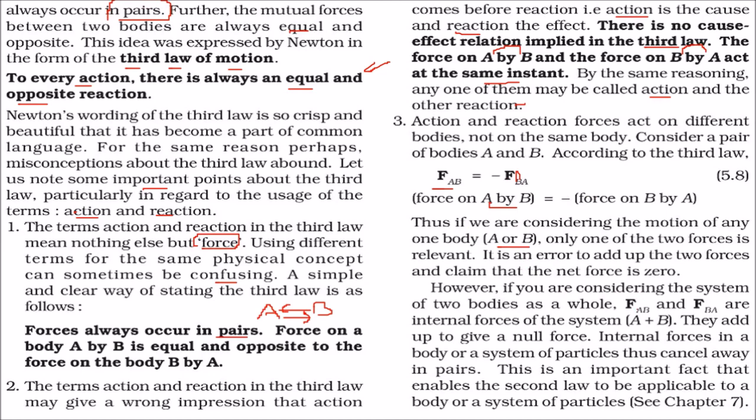But when you are talking about a system as a whole, means this is for this scenario, it is not acceptable. But when we are considering a system that is two bodies as a whole, that is FAB and FBA are the internal force which are acting on a system A plus B. Both the bodies are involved, means you consider them as a system.